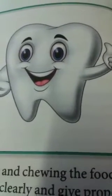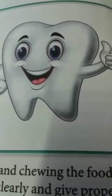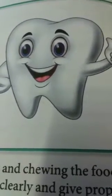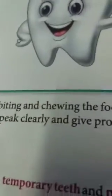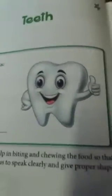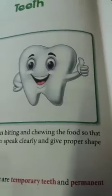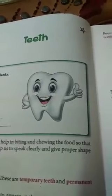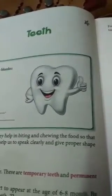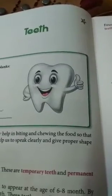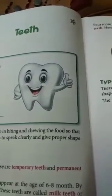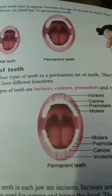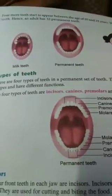Now we have two sets of teeth in our entire life — that is temporary teeth and permanent teeth. When a child is born, he has no teeth. The child gets teeth at the age of 6 to 8 months, and those sets of teeth are called temporary teeth, or milk teeth we can say.